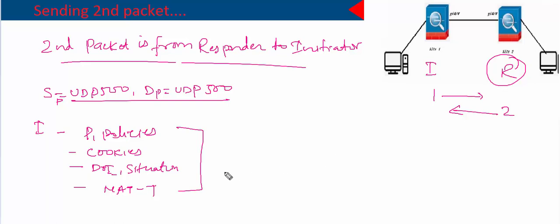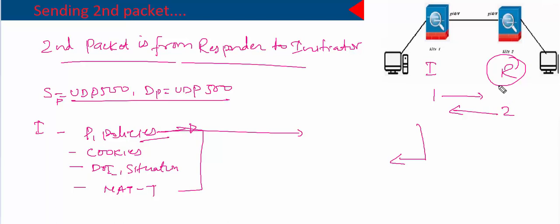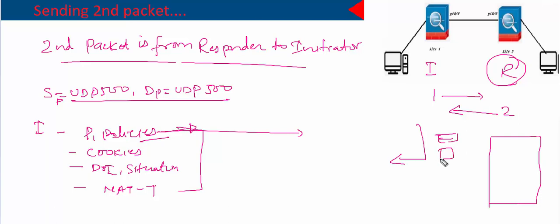The responder, when it replies, sends similar things except that in the phase one policies it sends only the selected policy. The initiator may send more than one phase one policy, but the responder will select only one — the one that matches with the policy configured on itself. It starts comparing the received policies with the policy it has already configured.